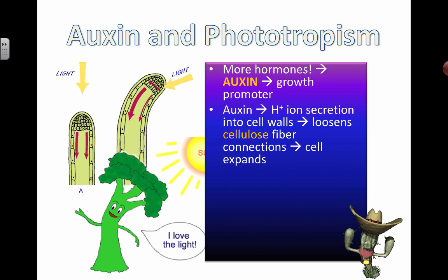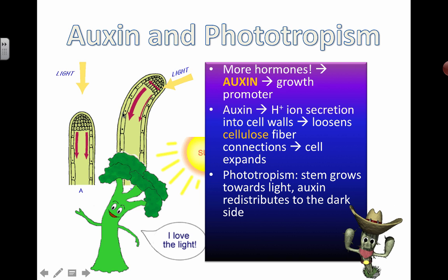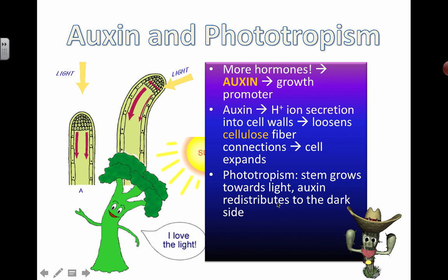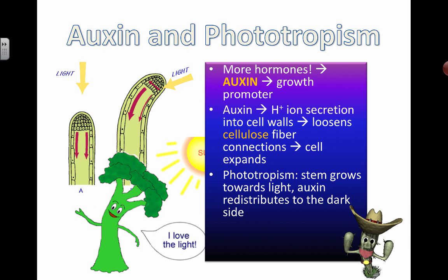I'll have this written down in the next slides so you can take your time and go through it. If the light source gets moved to the other side, then the exact opposite thing happens — auxin accumulates on the new dark side, causing the hydrogen ion secretion, change in gene expression, cellulose fibers weakening, and expansion in the other direction. We call this idea phototropism, which means growth towards or away from light. In this case, the stem is considered to be positively phototropic, meaning it grows towards the light.